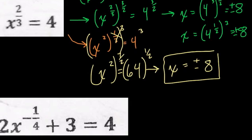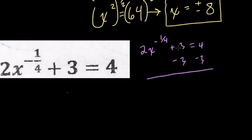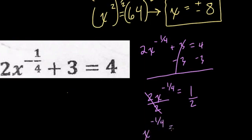Now here, we're going to use the same kind of strategy, even though it looks a lot more difficult. First thing I'm going to do is rewrite it. So we have 2 x to the negative 1 4th plus 3 equals 4. Subtract 3 from both sides. These cancel out. We have 2 x to the negative 1 4th equals 1. Now what? We'll have to divide 2 on both sides. So now we have x to the negative 1 4th is equal to 1 half.